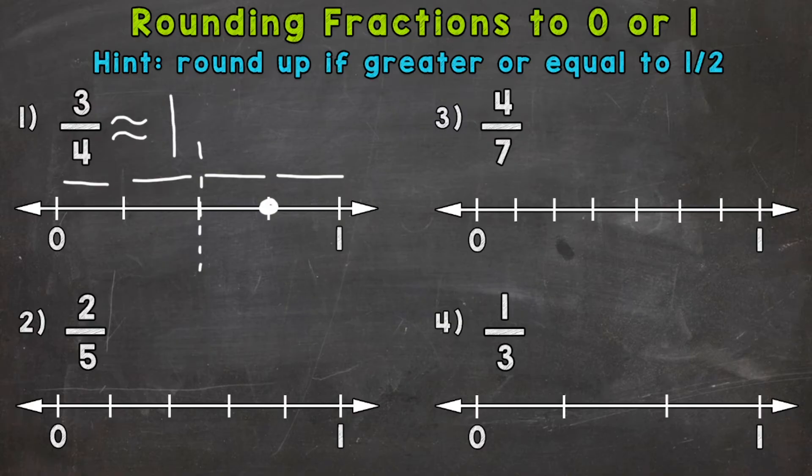Now another rule, if we look up here, if we didn't have this number line, we round up if the fraction is greater or equal to 1 half. So always round up if the fraction is greater or equal to 1 half. So let's take a look at number 2 where we have 2 fifths.